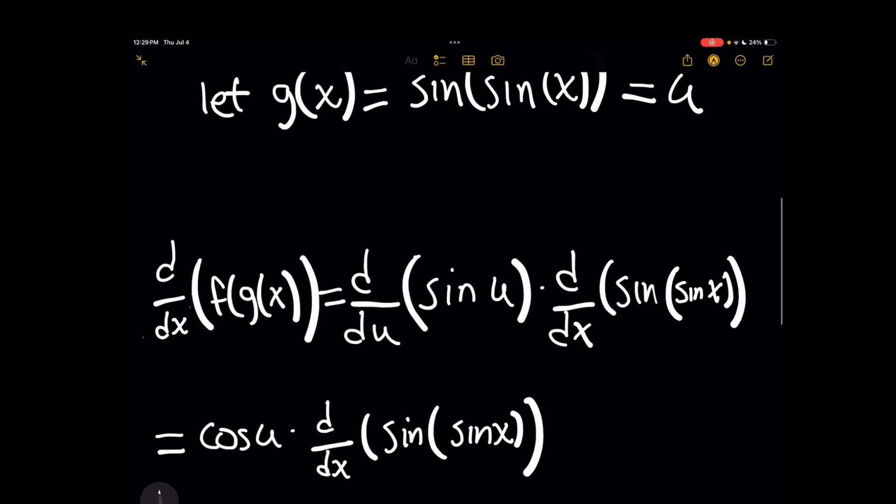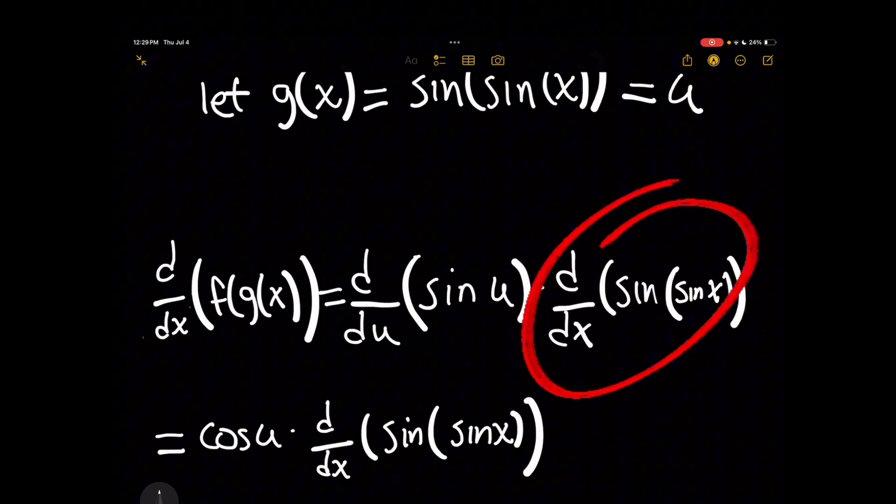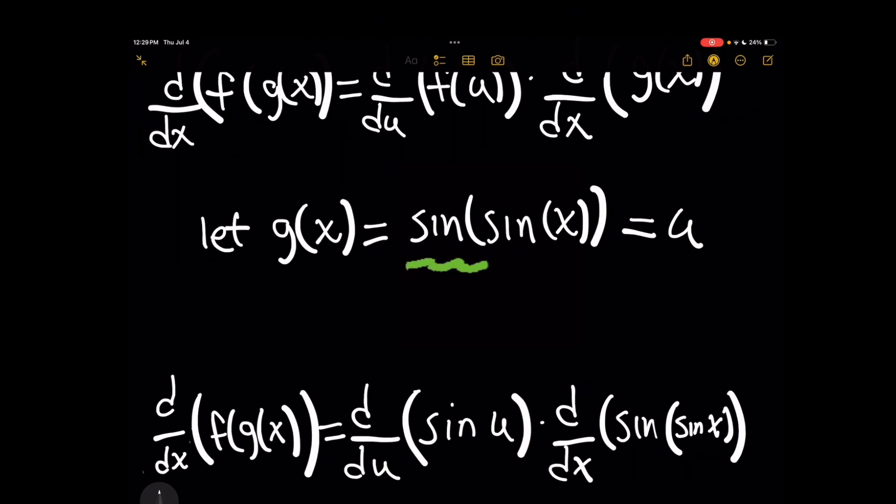So with the chain rule, we would then take the derivative with respect to u of sine of u, and then not forgetting the fact that we must multiply that result by the derivative with respect to x of all that stuff on the inside that we assign to g of x, which is sine of sine of x.